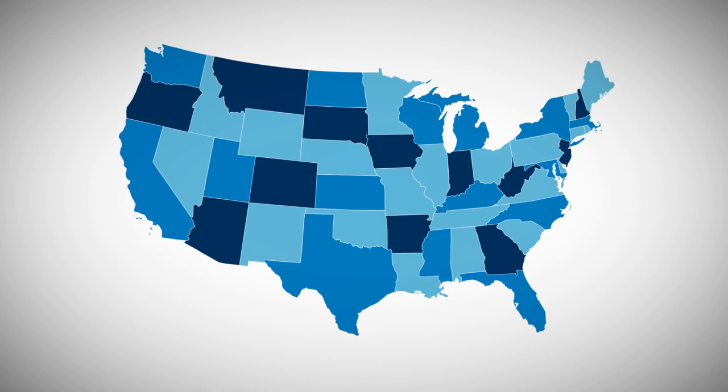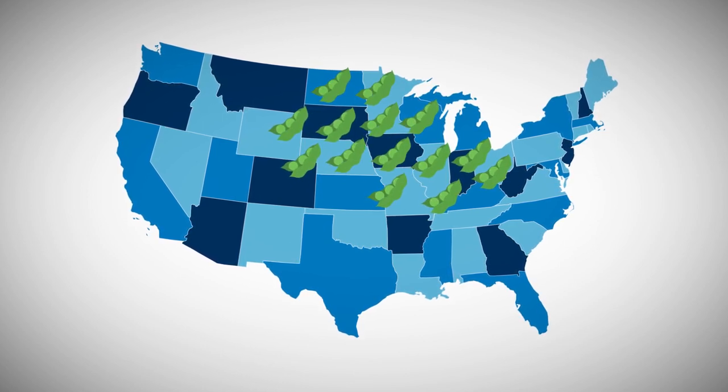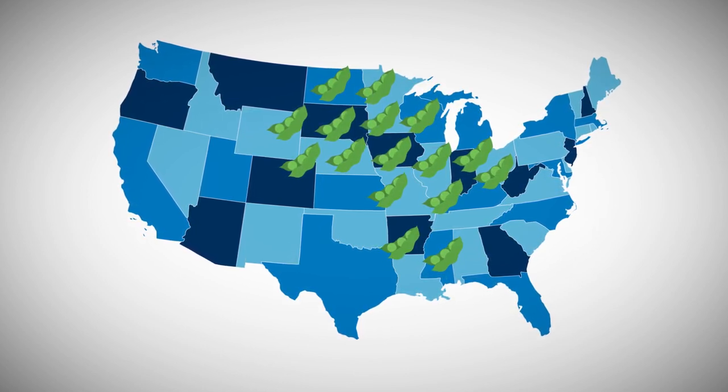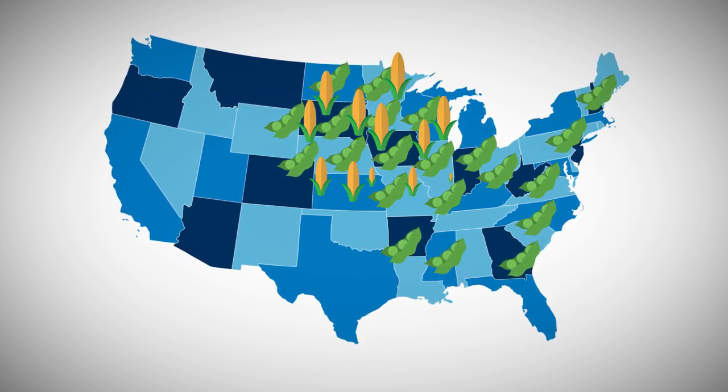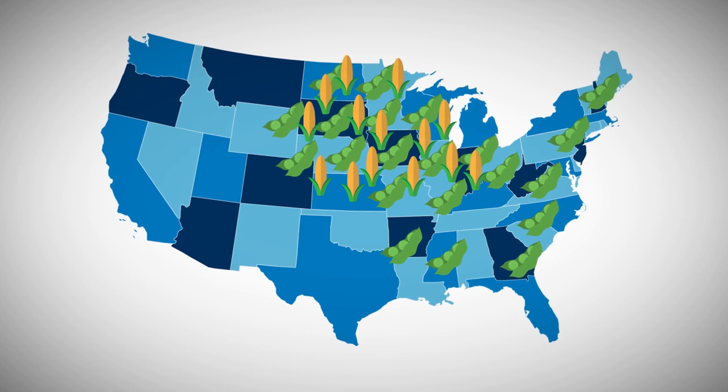The heart of soybean production is the Midwest, but significant production also occurs in Mississippi, Arkansas, and along the East Coast. In fact, the soybean-growing belt overlaps much of the central and southern areas of the Corn Belt.